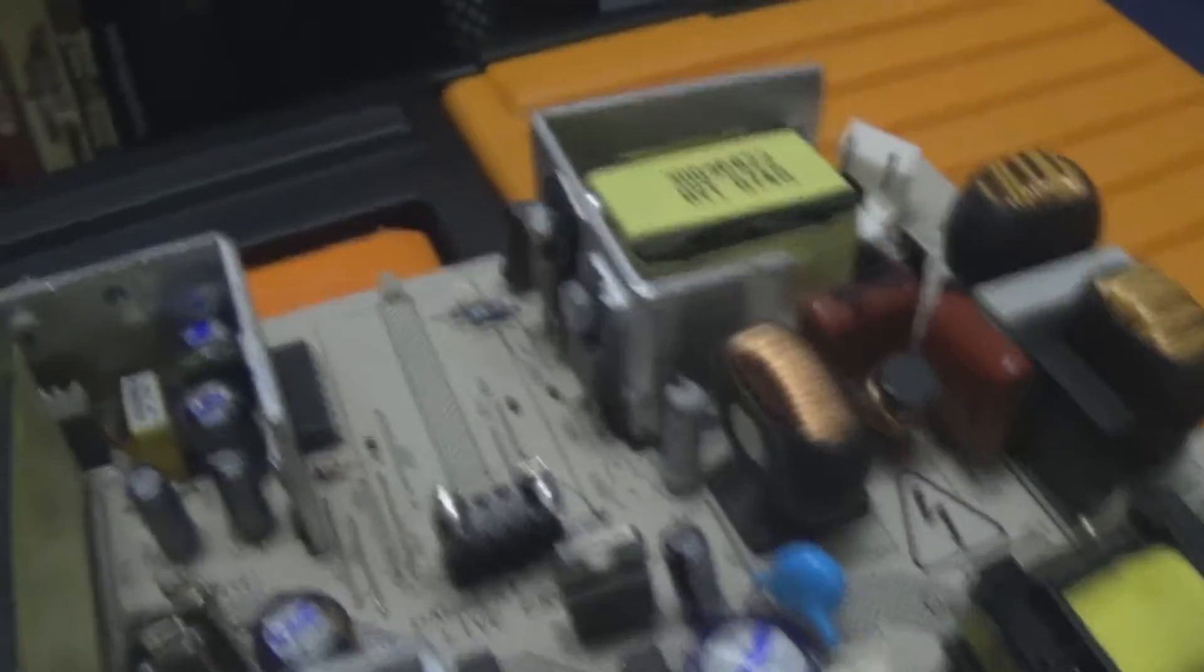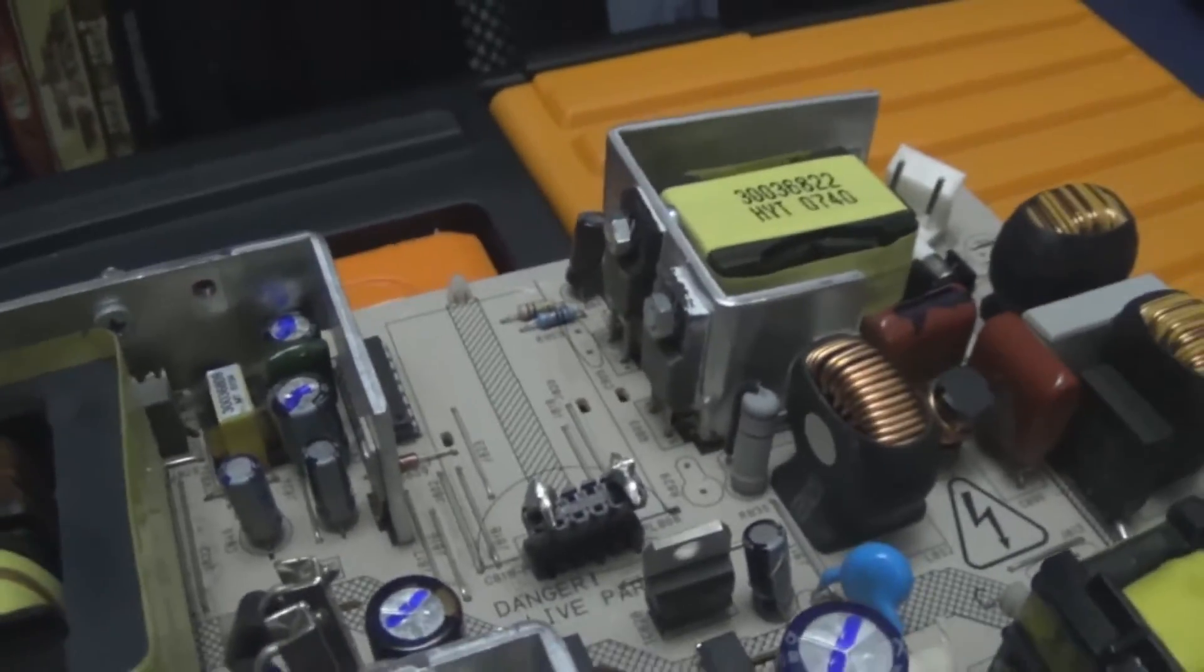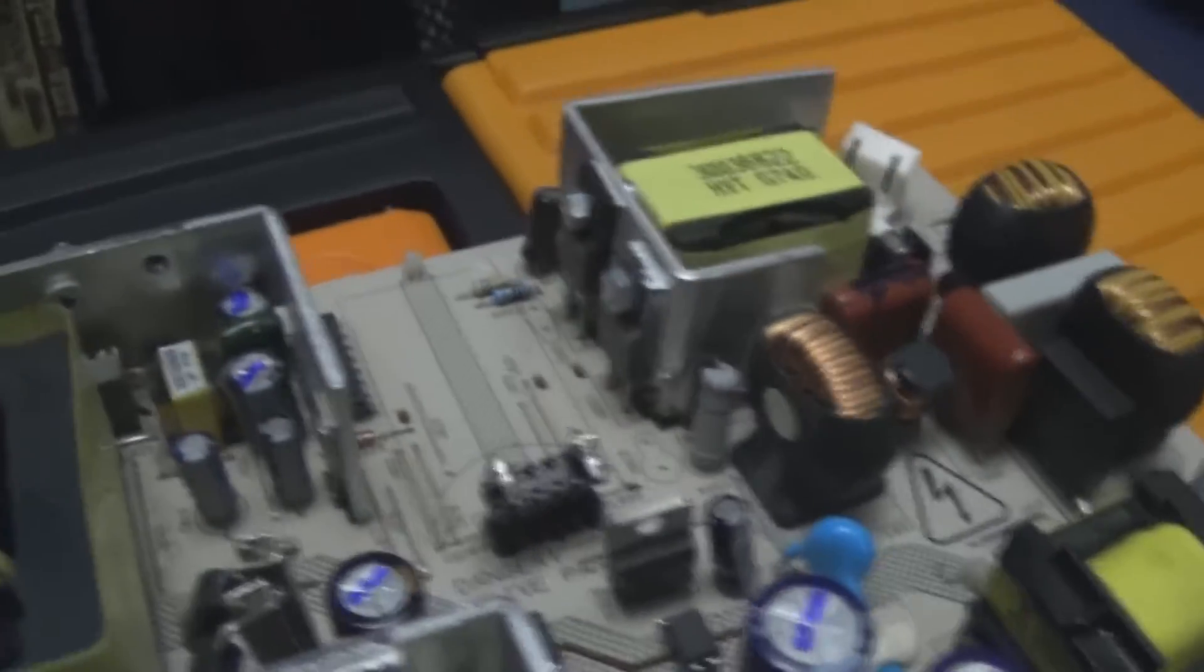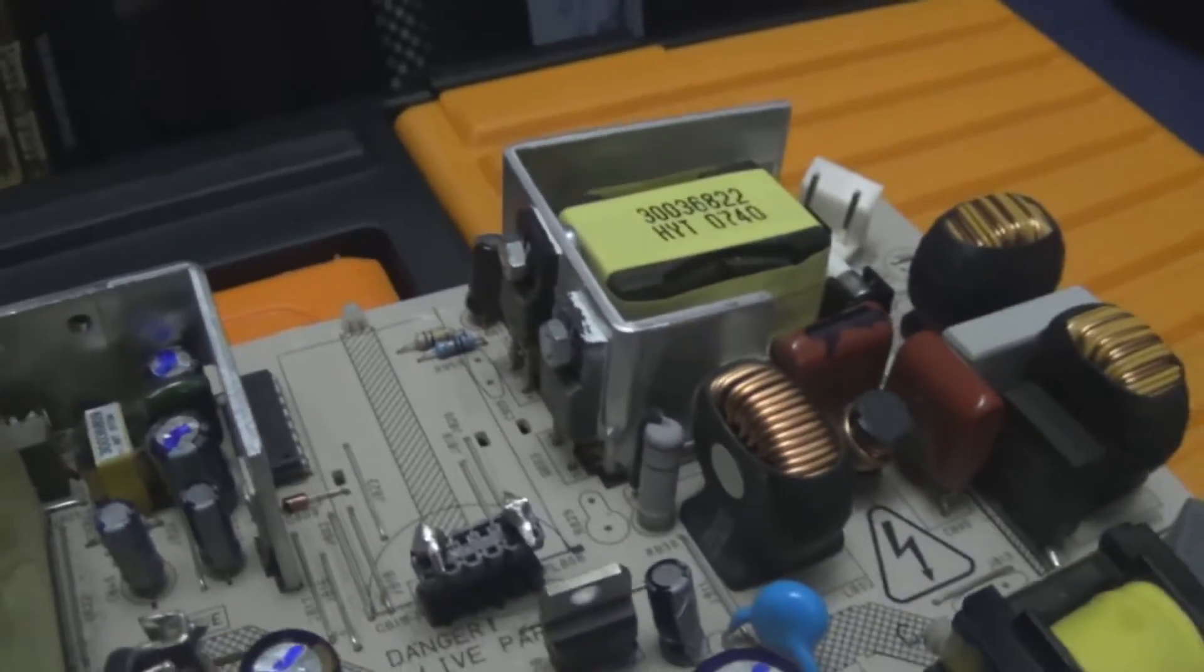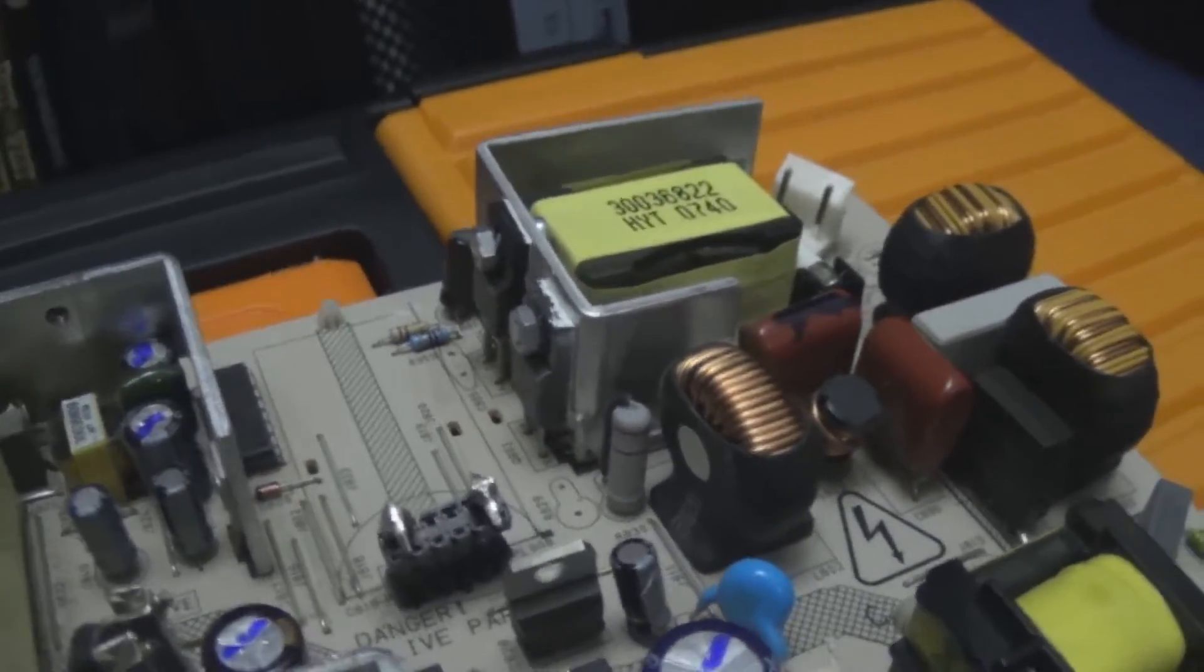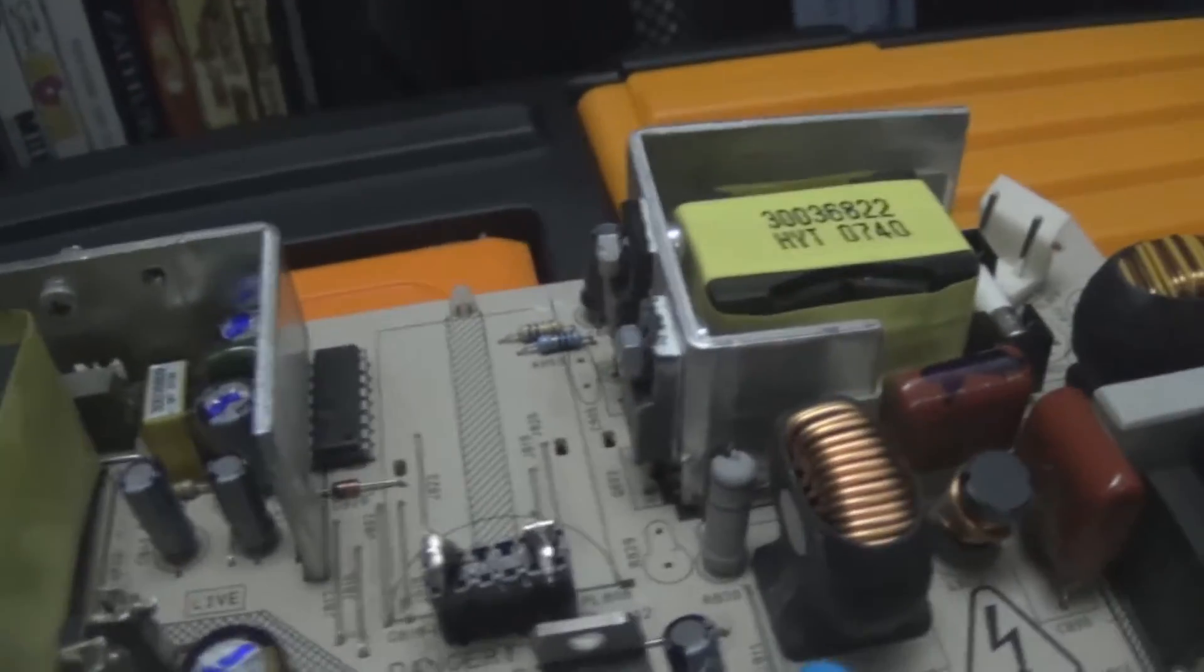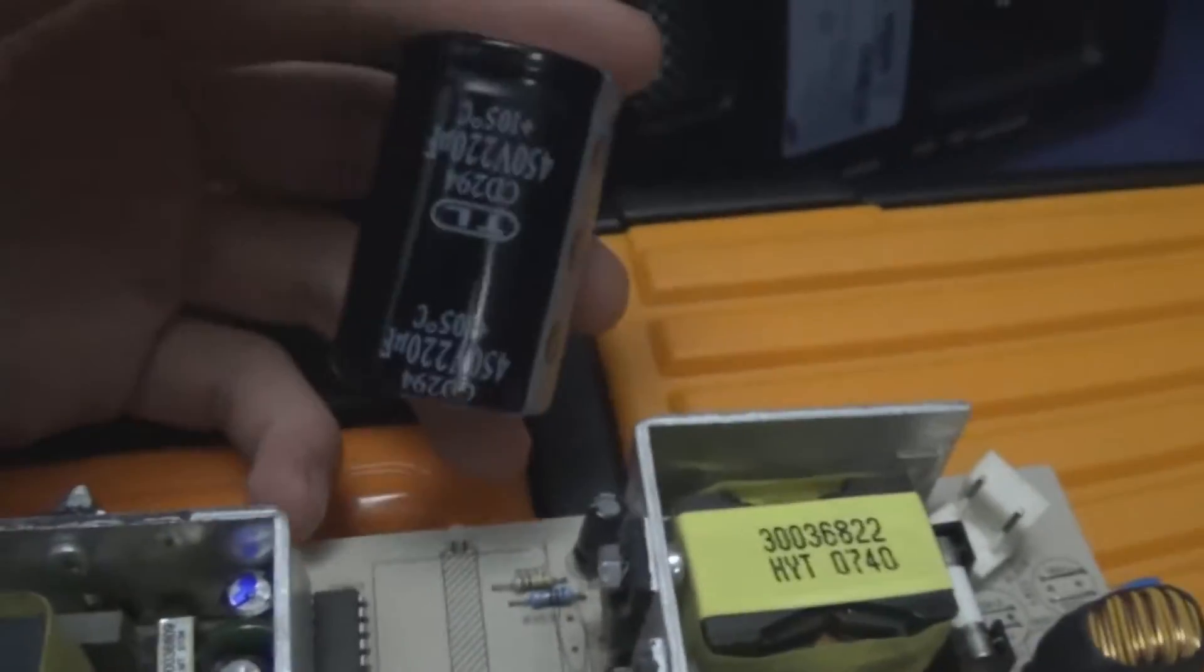Now STJ suggested that I checked the filter cap. Now I checked the filter cap originally and it had about 0.89 ohms across it, or ESR sorry. And 200 microfarads of capacitance, which is pretty good for a primary cap. So I didn't suspect anything but he suggested that it could be breaking down as soon as it gets hit with the DC, the high voltage DC coming off the PFC section here. And that I should check it out of circuit. Well, here's the cap here.